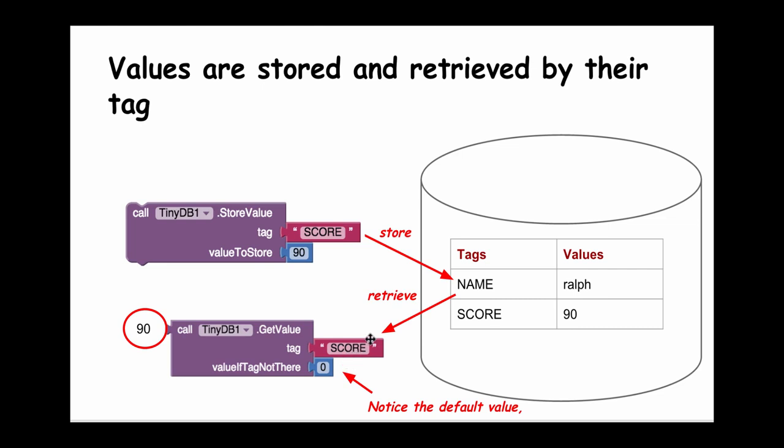If I know that the data stored with this tag is a number, then I should put some default number in here, rather than a default string. Then I can use whatever's returned in arithmetic and other number blocks.